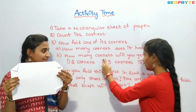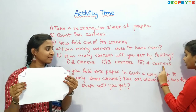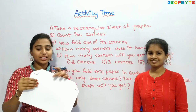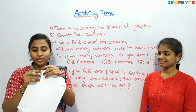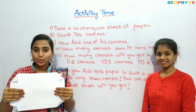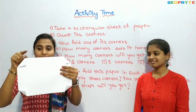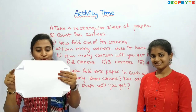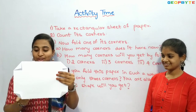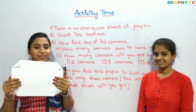How many corners will you get by folding four corners? Already we have three corners folded. Let us fold the fourth corner. Now let us count — one, two, three, four, five, six, seven, eight. We have eight corners now.